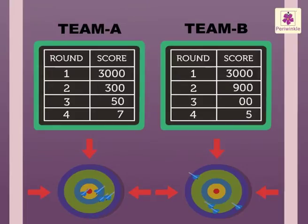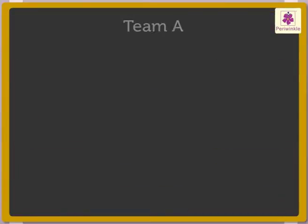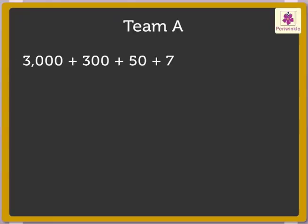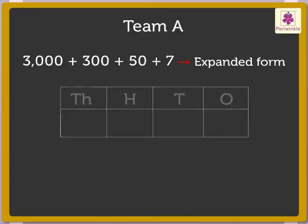Let us find out the total score after four rounds. Team A scored three thousand plus three hundred plus fifty plus seven. The score is written in expanded form. To find the total score of Team A, we need to write it in its standard form.